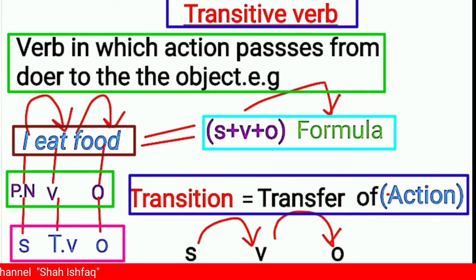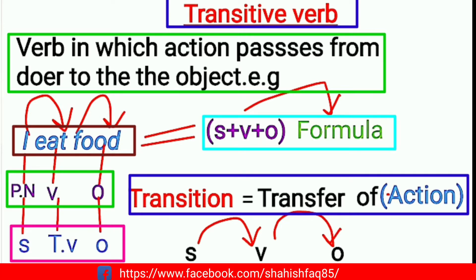For example, take this sentence: 'I eat food.' Here, 'I' is a pronoun and the subject. 'Eat' is the verb — a transitive verb. 'Food' is the object. So 'eat' is a transitive verb because the action transfers to the object 'food.' Transitive verb means the verb must have an object.